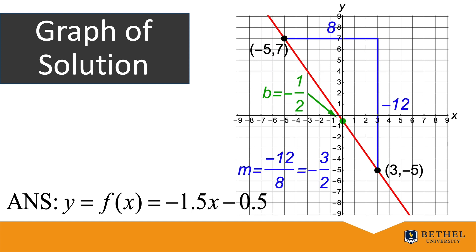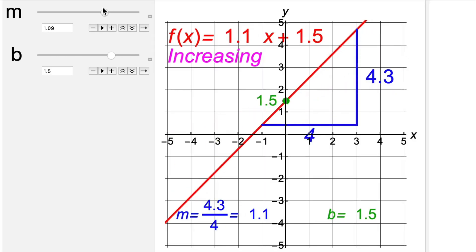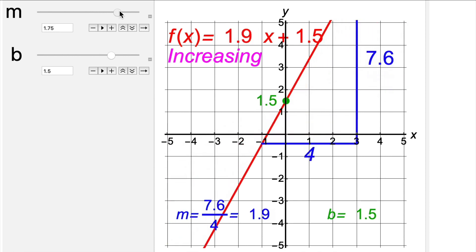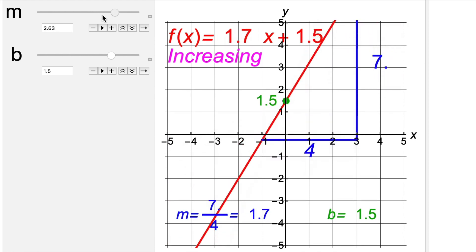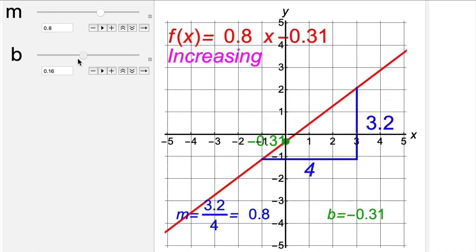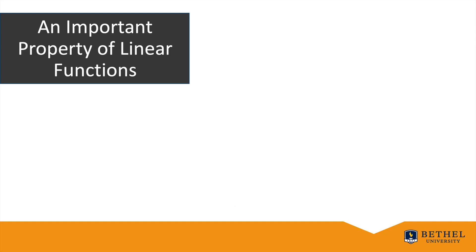Graphically: the two points (−5, 7) and (3, −5) are shown; the run is 8 and the rise is −12. This function is decreasing — the line goes down as x moves to the right. The slope m = −3/2 = −1.5, and the y-intercept b = −1/2 = −0.5. In general, a positive slope means the function is increasing; a negative slope means decreasing. The magnitude of the slope measures steepness. The y-intercept b is the initial value of the function at x = 0.